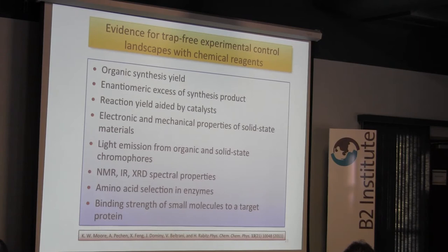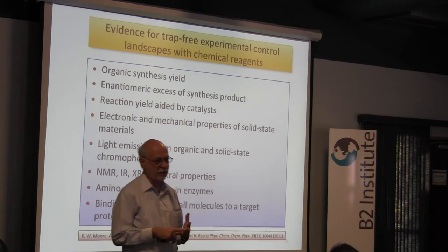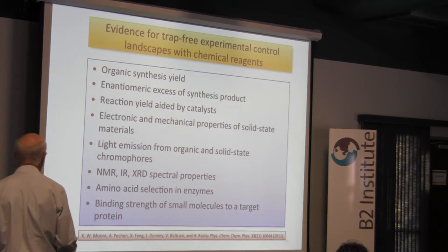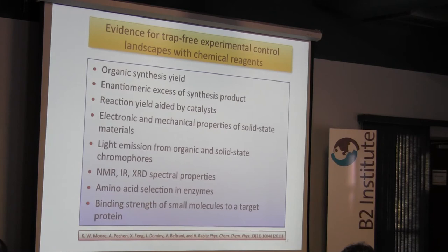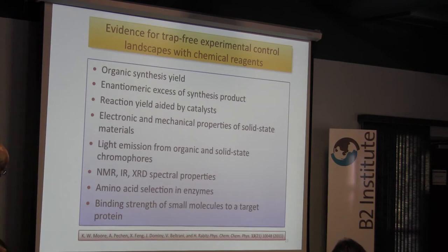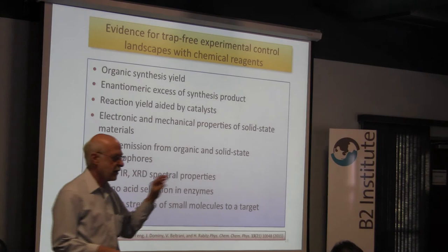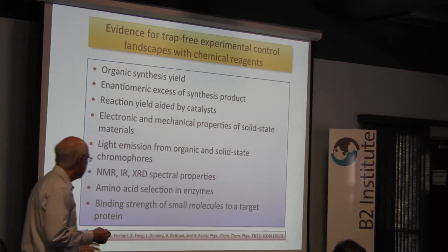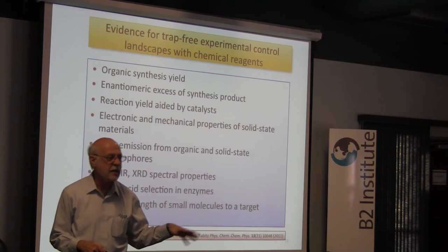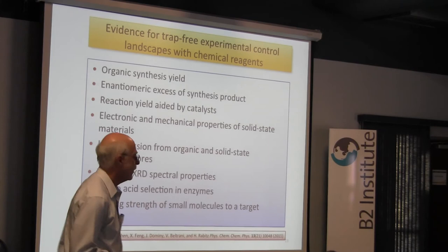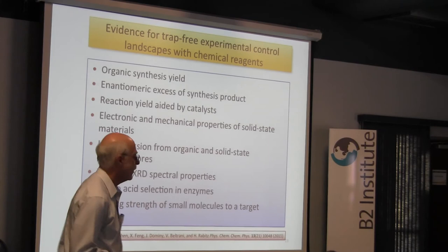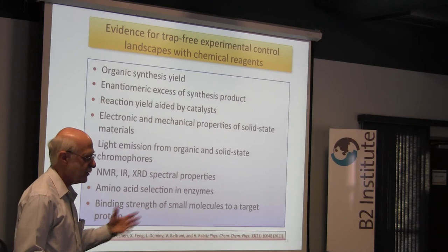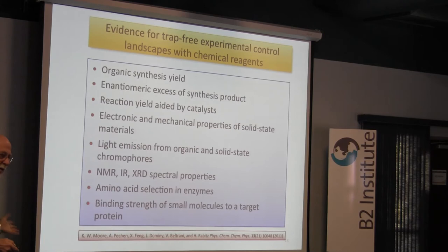In the literature over the last 20 to 25 years, there are hundreds of papers like that. What we found was that statistically 90% of those landscapes in the chemical literature have no traps; 10% do. But none of the papers — whether they have traps or don't — say anything about it, because individually there's no reason to say it. But it's rather stunning that 90% of these landscapes in chemistry have no traps.